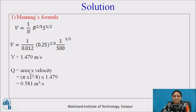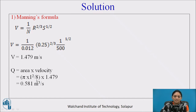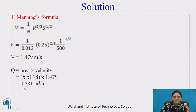Now find discharge. Q = area × velocity. Since the sewer runs half full, use half the area: πd²/8. Multiplying by velocity 1.479, the discharge equals 0.581 cubic meters per second, or 581 liters per second.